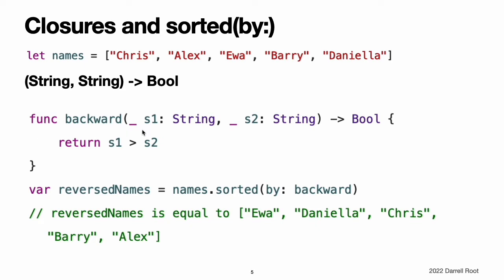If the first string, S1, is greater than the second string, S2, the backward function will return true, indicating that S1 should appear before S2 in the sorted array. For characters and strings, greater than means appears later in the alphabet. This means that the letter B is greater than the letter A, and the string Tom is greater than the string Tim. This gives a reverse alphabetical sort, with Barry being placed before Alex, and so on. However, this is a rather long-winded way to write what is essentially a single expression function, A is greater than B. In this example, it would be preferable to write the sorting closure inline using closure expression syntax.